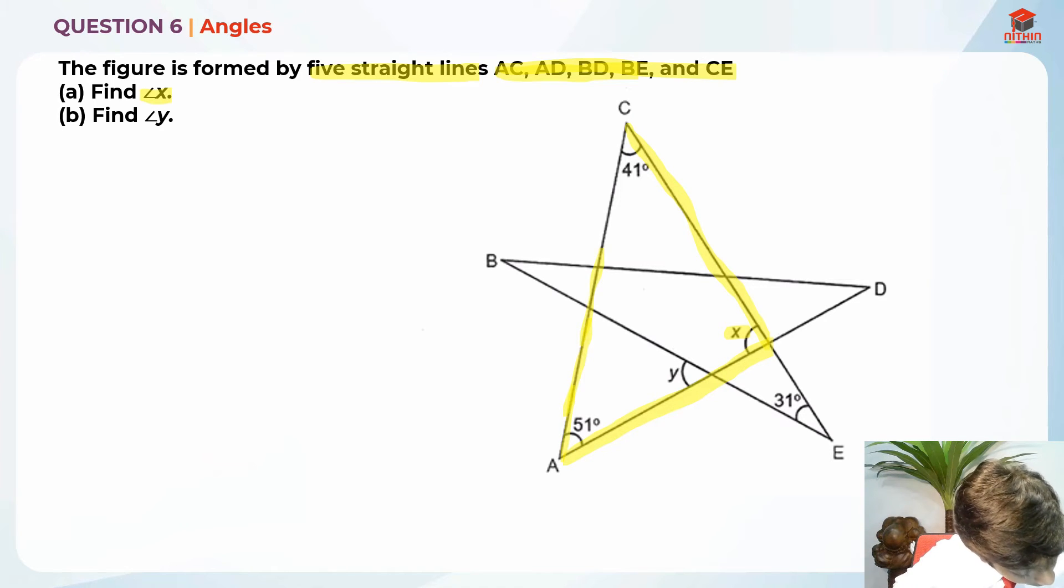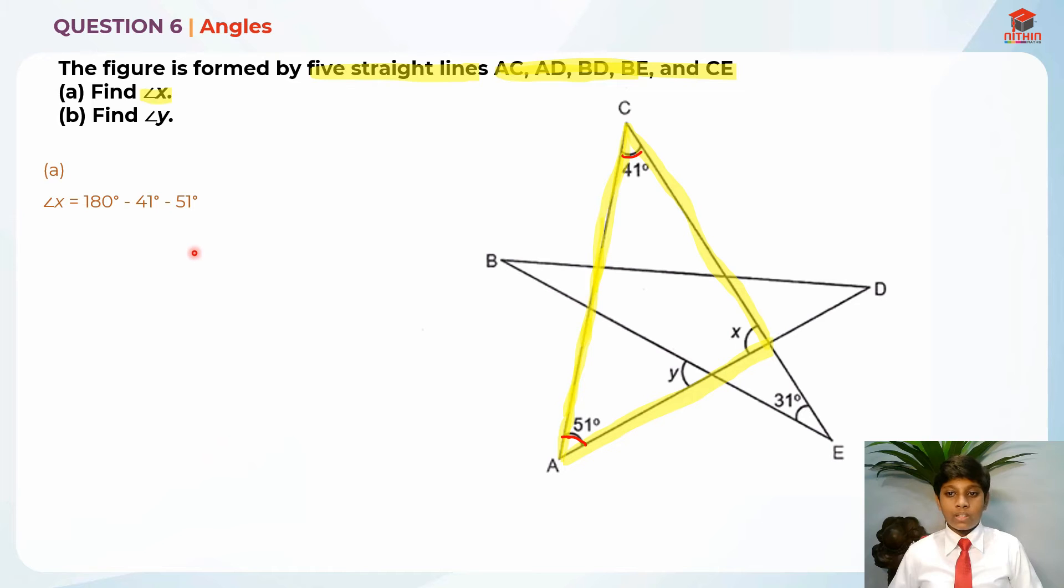This triangle, we already have two of the angles known, which is 51 degrees and 41 degrees. So in order to find angle X, it's actually really easy. You know that the total angles add up to 180 degrees in a triangle. So in order to find angle X, you take 180 degrees minus 41 degrees minus 51 degrees. It will give us 88 degrees as the answer for part A.